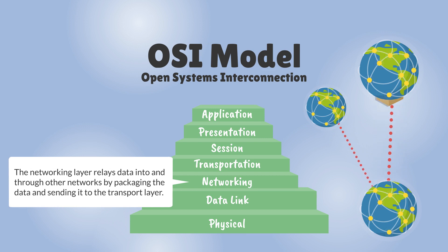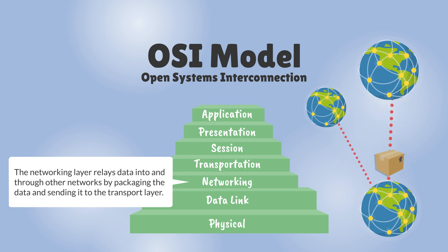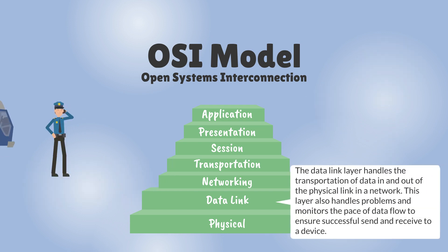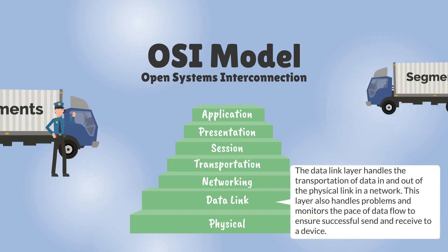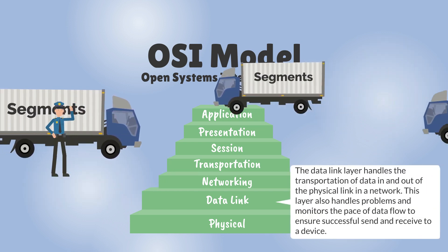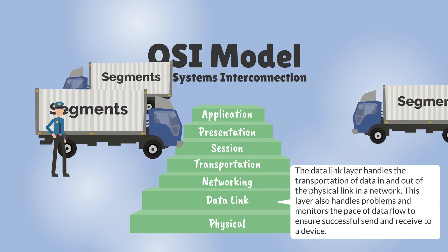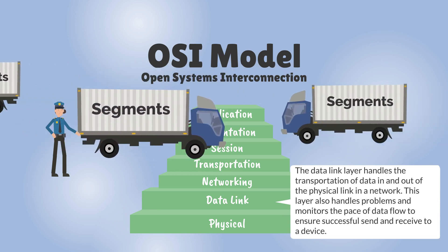The network layer relays data into and through other networks by packaging the data and sending it to the transport layer. The data link layer handles the transportation of data in and out of the physical link in a network.